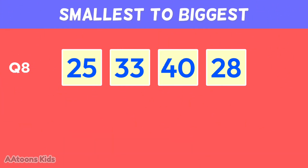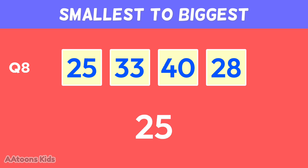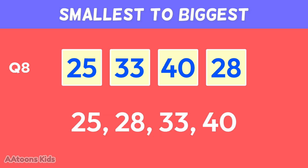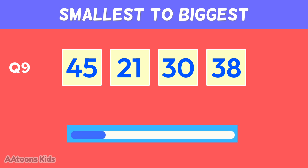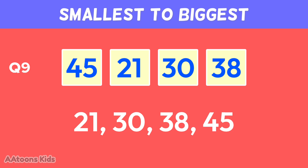Arrange these numbers from smallest to biggest: twenty-one, thirty, thirty-eight, forty-five.